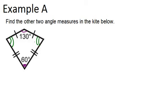Another thing you need to know is that for any quadrilateral, the four angles will add up to 360 degrees. So that means the 130 degree angle plus the 60 degree angle plus these two unknown angles equal 360 degrees.